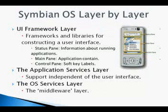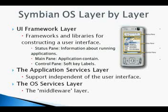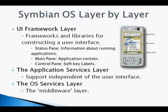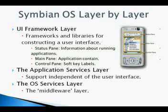The first layer is the UI framework layer, which is the user interface layer. As the topmost layer of the Symbian operating system, the UI framework layer provides the frameworks and libraries for constructing a user interface, including the basic class hierarchy for user interface controls and other frameworks and utilities used by the user interface components. The UI framework layer also includes a number of specialist graphics-based frameworks, including the animation frameworks and the front-end processor framework.